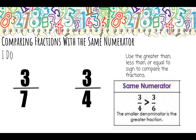Let's look at one more example: three-sevenths and three-fourths. My numerators are the same, and the rule is that the fraction with the smaller denominator is actually the larger fraction. Three-fourths has the smaller denominator, so three-sevenths is less than three-fourths.